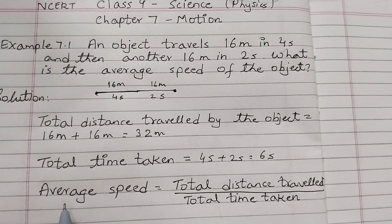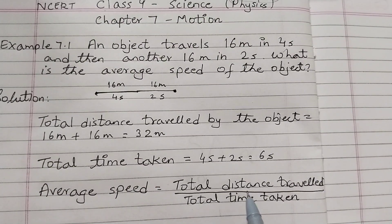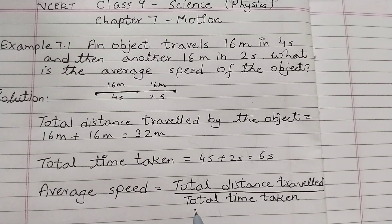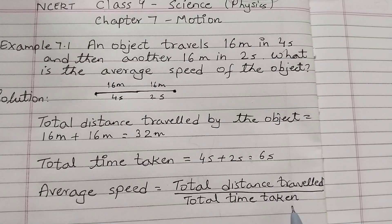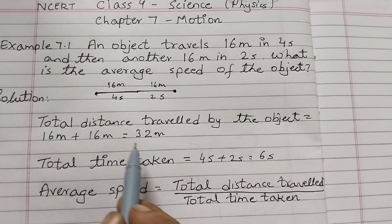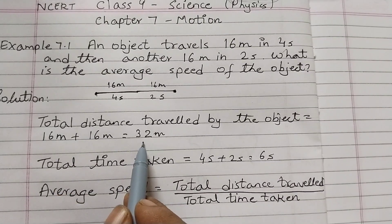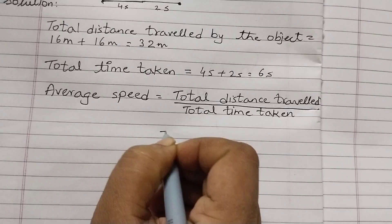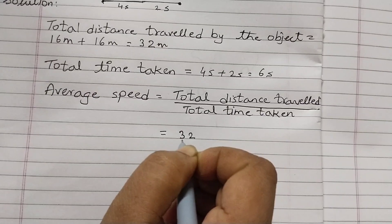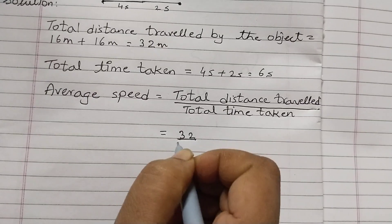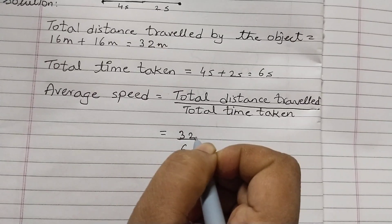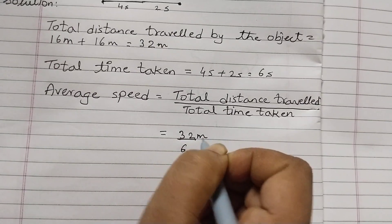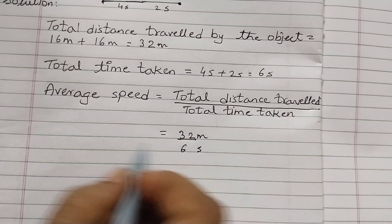The formula for average speed is total distance traveled divided by total time taken. Total distance traveled is 32 meters and total time taken is 6 seconds, so we can write this as 32 divided by 6.